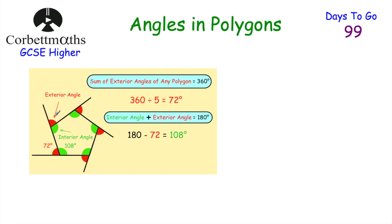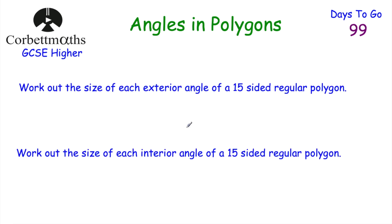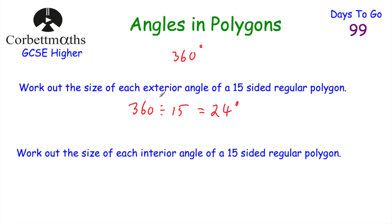The interior angle and the exterior angle will always add together to be 180 degrees — that's an important fact. So let's look at some questions. Find the size of each exterior angle of a 15-sided regular polygon. Since it's regular, all exterior angles are the same, and they always add to 360 degrees. So 360 divided by 15 equals 24 degrees — each exterior angle is 24 degrees.